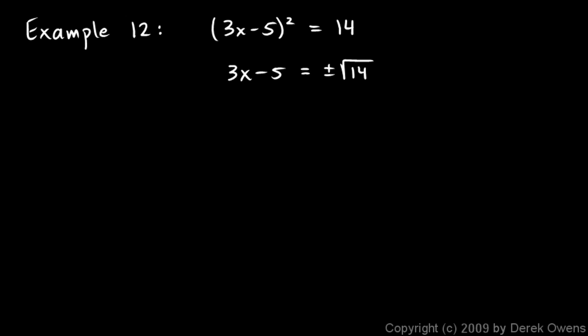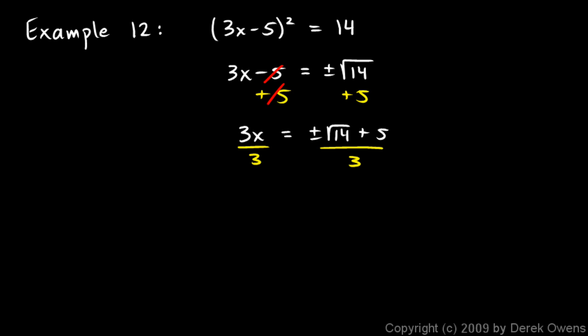So I still need to isolate x. I'll add 5 to each side, and that gives me 3x over here — those cancel out. So 3x is equal to plus or minus the square root of 14 plus 5, and then I'll need to divide by 3. The 3's cancel out, and I have x is equal to plus or minus the square root of 14 plus 5 over 3. It's typical to write the rational number first, so I'll write it as x equals 5 plus or minus the square root of 14 over 3.